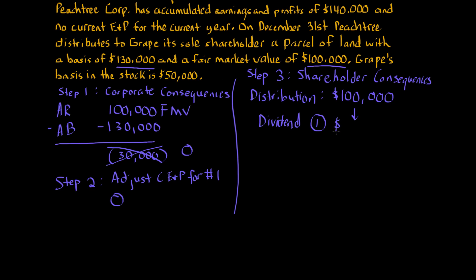Since the distribution amount of $100,000 is less than the total E&P of $140,000, all of the distribution is considered a dividend. That means there is no return of capital — which would reduce the shareholder's basis with no tax consequence — so Grape's $50,000 basis in the Peachtree Corporation stock remains $50,000 after this distribution.